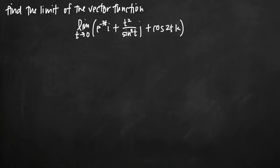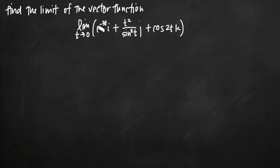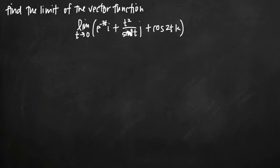Today we're going to be talking about how to find the limit of a vector function. In this particular problem we've been asked to find the limit as t approaches zero of this vector function: e to the negative 3t times i, plus t squared divided by sine squared of t times j, plus cosine of 2t times k.